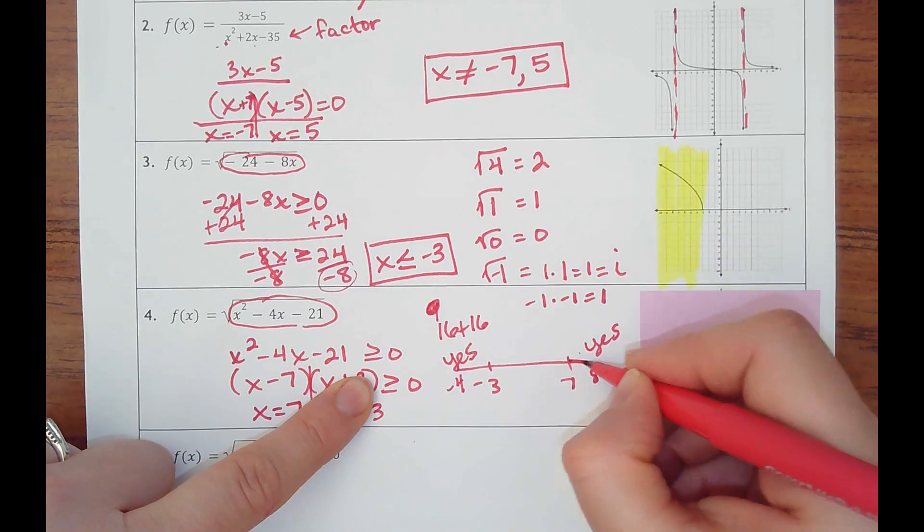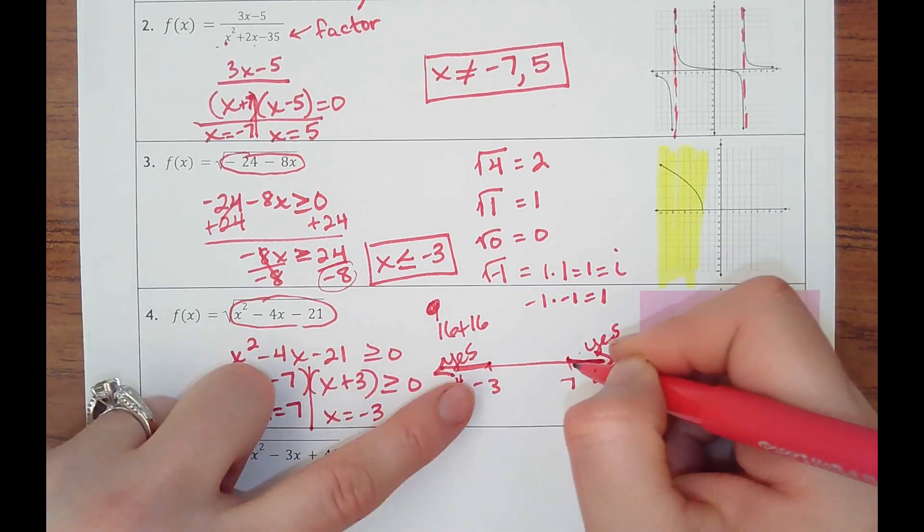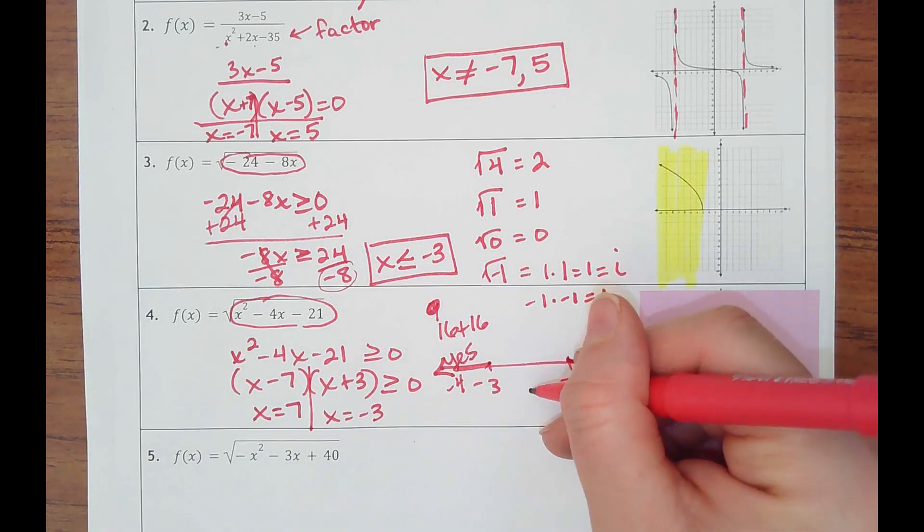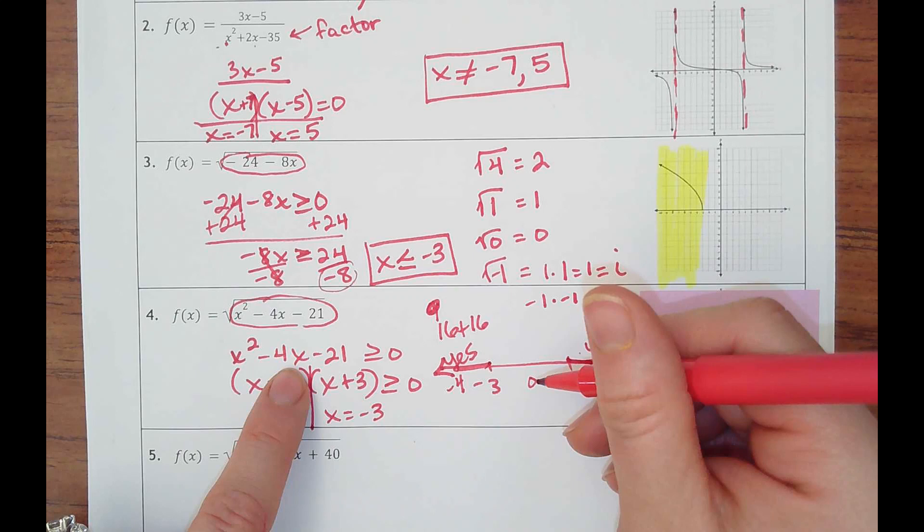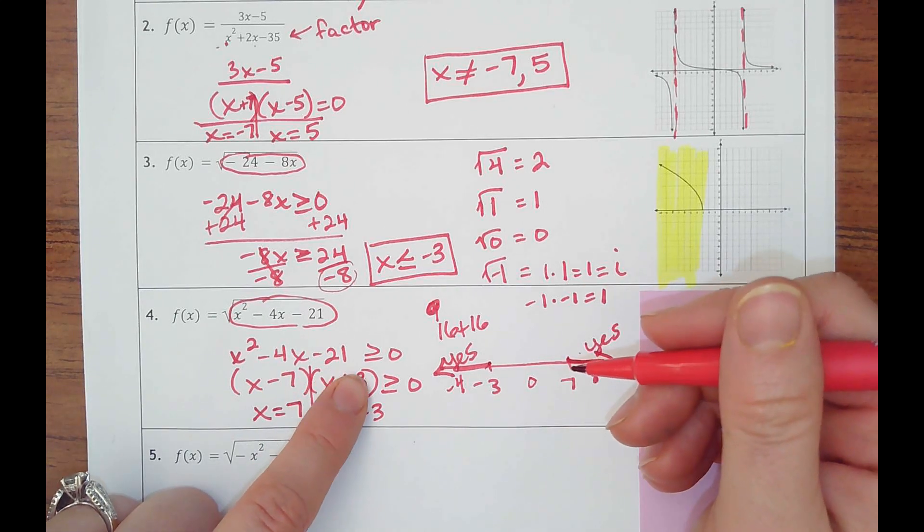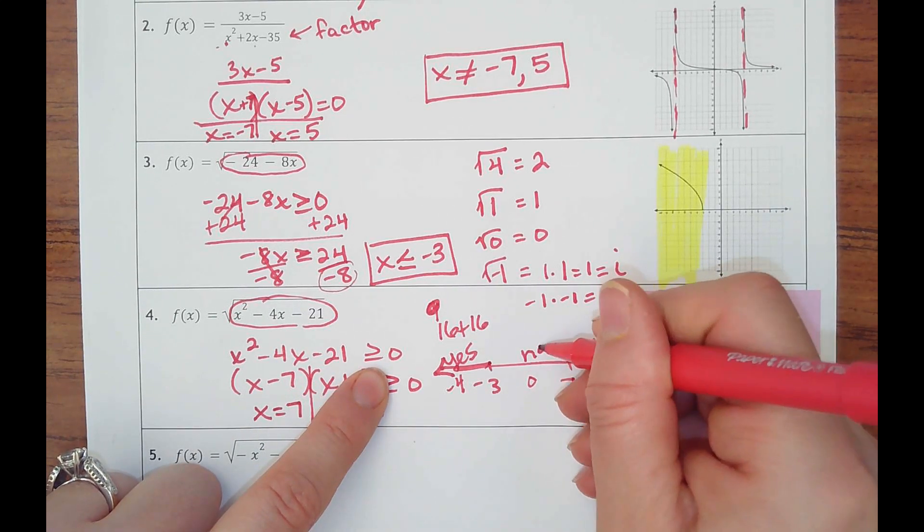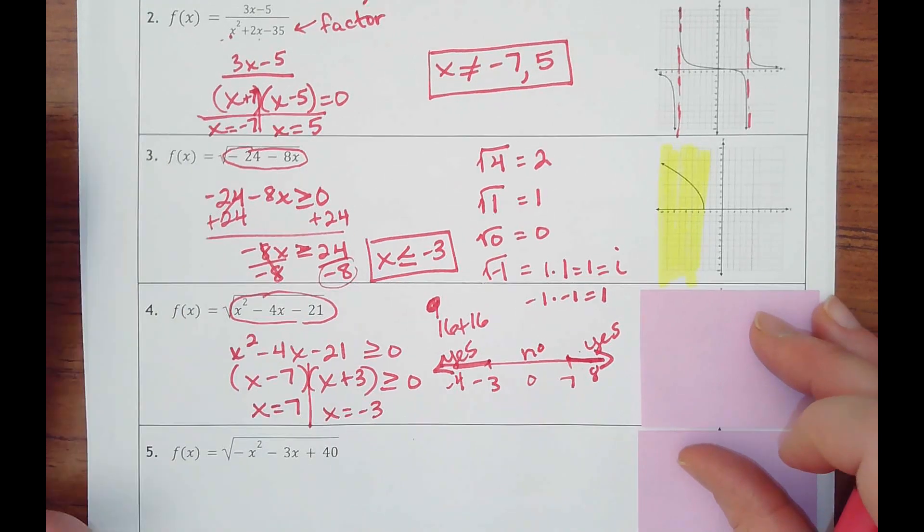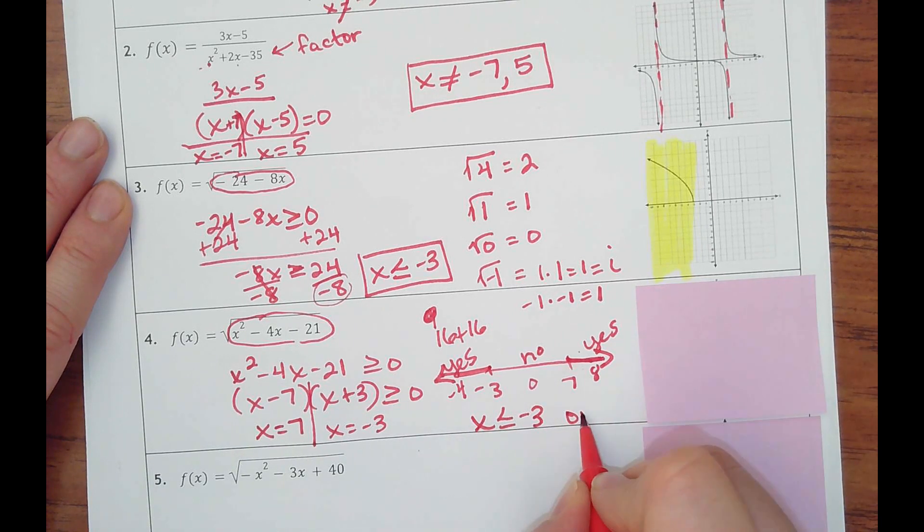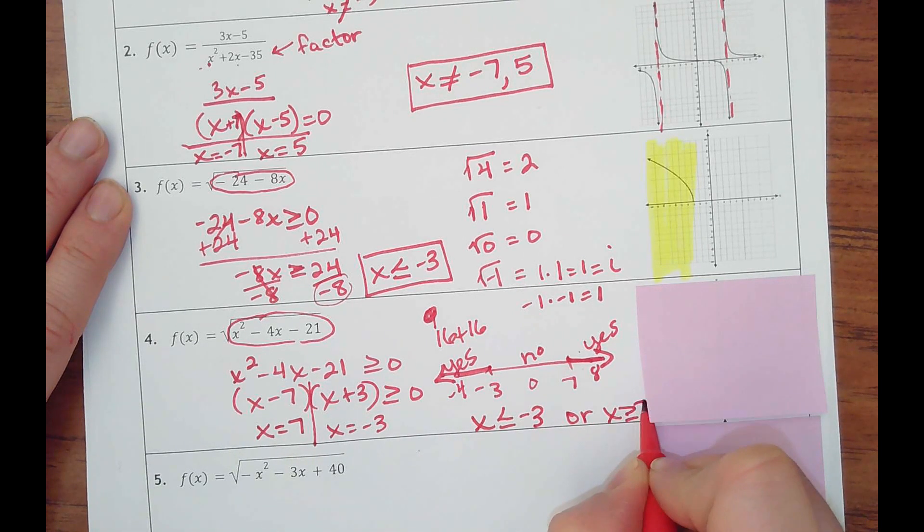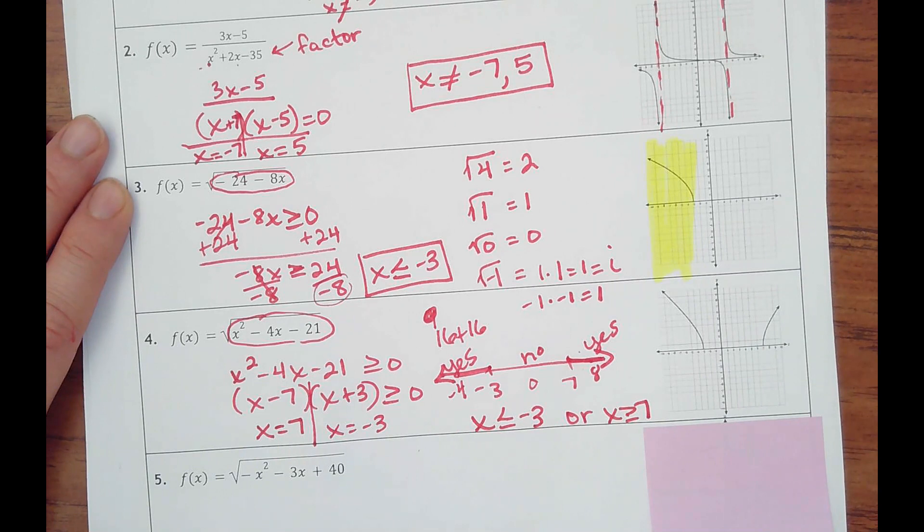So it means that I'm going an or, where I'm going this way or this way. If I tried, say, zero, zero squared minus 4 times zero is zero minus 21, that's negative 21. That is not greater than or equal to zero. So that does not work. So I want to say that my domain is x values less than or equal to negative 3, or x values greater than or equal to 7. So it looks like that.